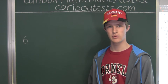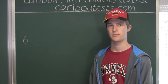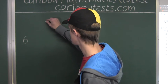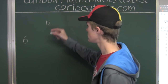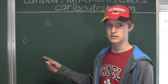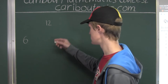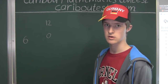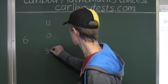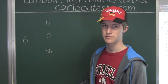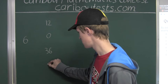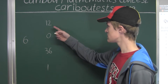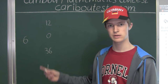Now let's see what we can generate with two sixes. We can have 6 + 6 = 12, 6 − 6 = 0, 6 × 6 = 36, and 6 ÷ 6 = 1. So these are the four numbers that can be generated from two sixes.